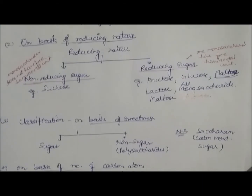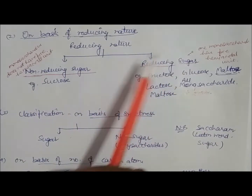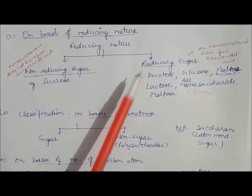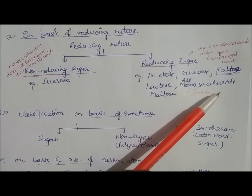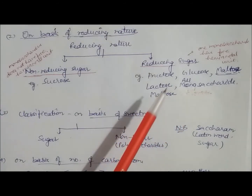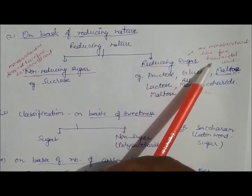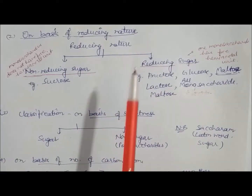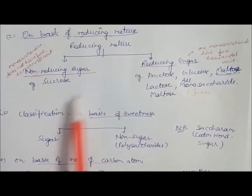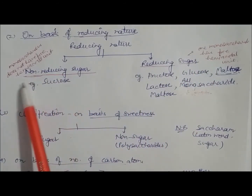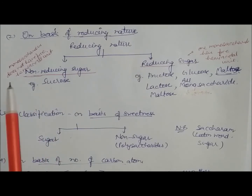The second classification is based on reducing sugars. There are two types: reducing sugars and non-reducing sugars. Reducing sugars include fructose, glucose, maltose, and lactose — all monosaccharides are reducing sugars. They are called reducing sugars because their monosaccharide unit has a free hemiacetal group. Non-reducing sugars lack the hemiacetal group — sucrose and all polysaccharides are non-reducing sugars.